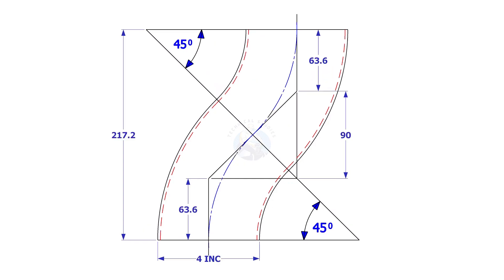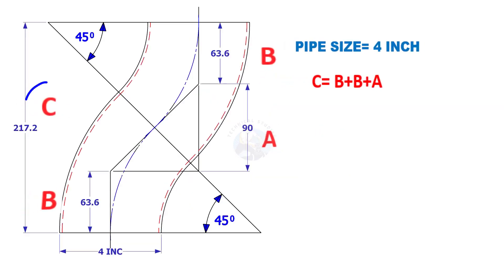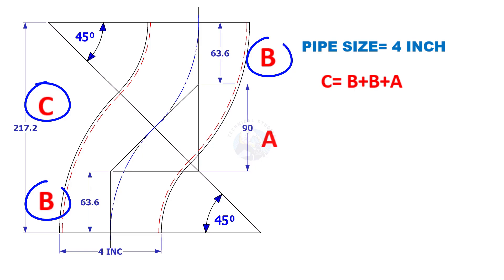Assume that the elbow diameter is 4 inches. We have to calculate the elbow center of a 45-degree elbow. The height C is equal to B plus B plus A.